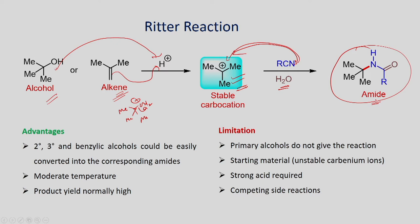The advantages of the Ritter reaction: secondary, tertiary, and benzyl alcohols can be easily converted into corresponding amides by readily reacting with a nitrile. The reaction can be carried out at moderate temperature with good yields. On the other hand, primary alcohols require vigorous reaction conditions and end up with by-products. So this reaction is good for secondary, tertiary, or benzylic alcohols to give corresponding amides.